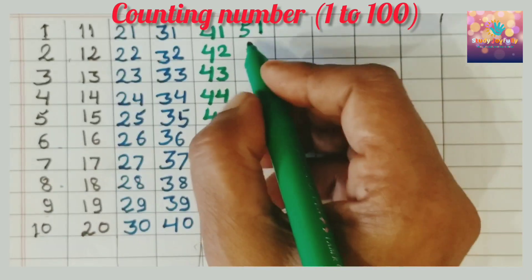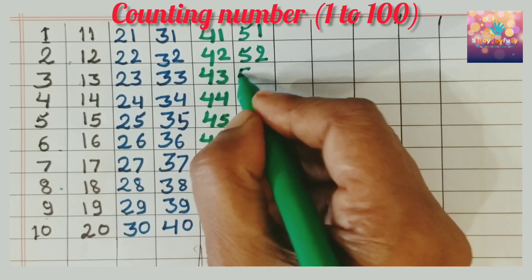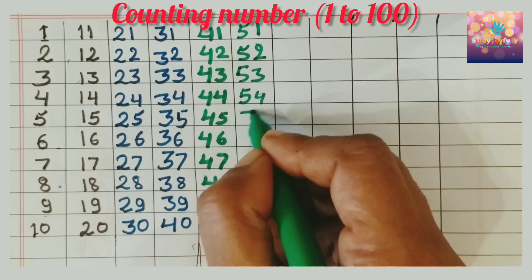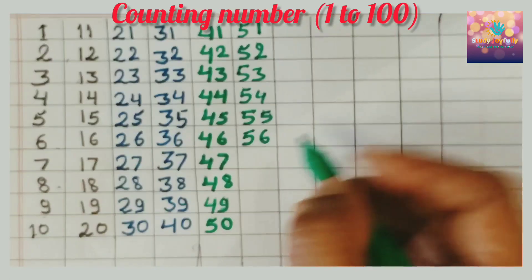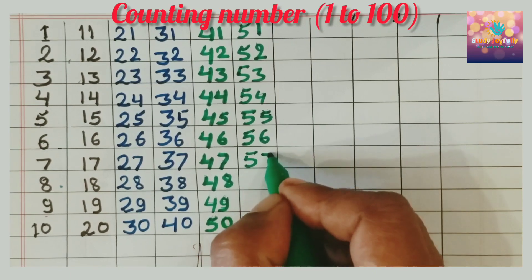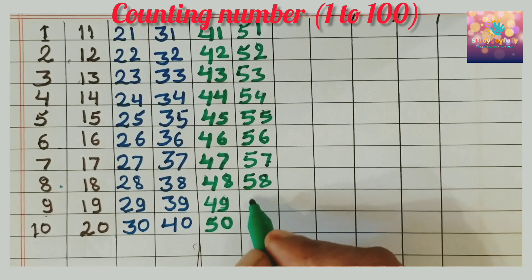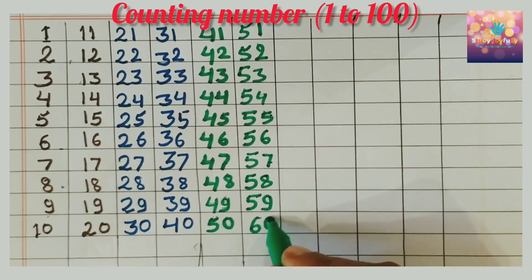5, 1, 51. 5, 2, 52. 5, 3, 53. 5, 4, 54. 5, 5, 55. 5, 6, 56. 5, 7, 57. 5, 8, 58. 5, 9, 59. 6, 0, 60.